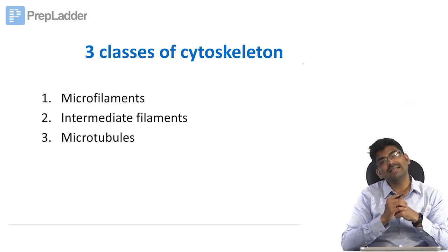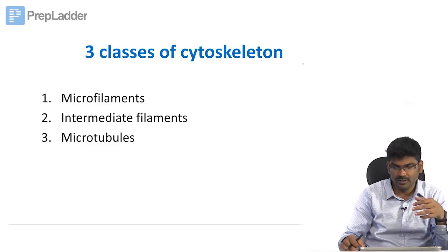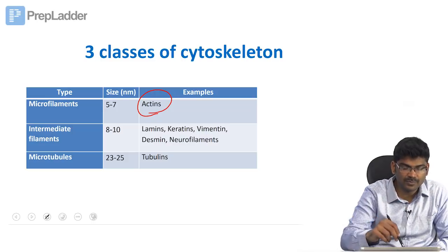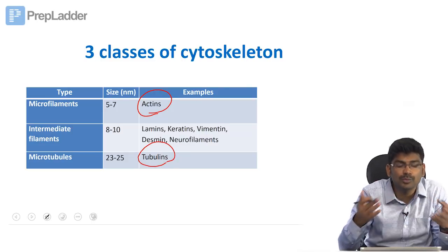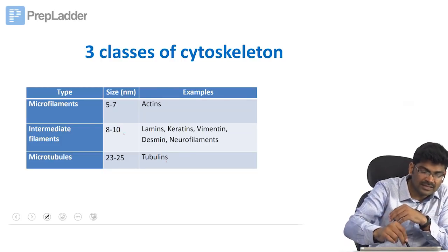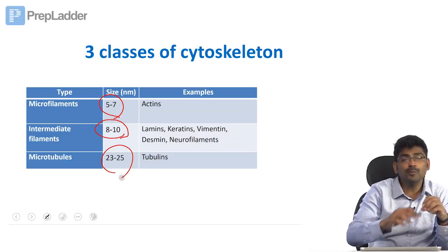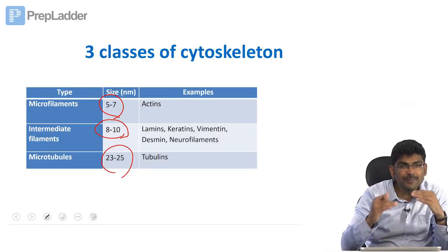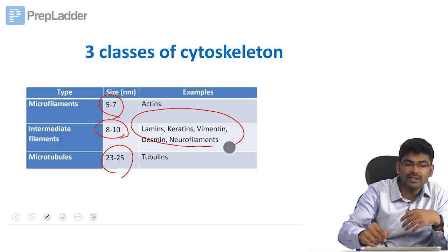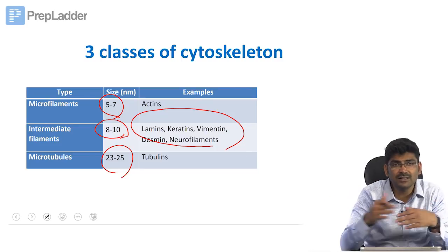There are three classes of cytoskeleton: microfilaments, intermediate filaments, and microtubules. Actin is a microfilament; tubulin, as the name suggests, forms microtubules. Intermediate filaments are intermediate in size and are heterogeneous — lamin, keratin, vimentin, desmin, neurofilament — there are so many proteins.